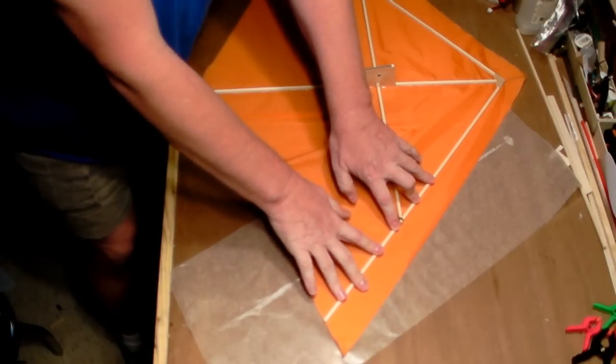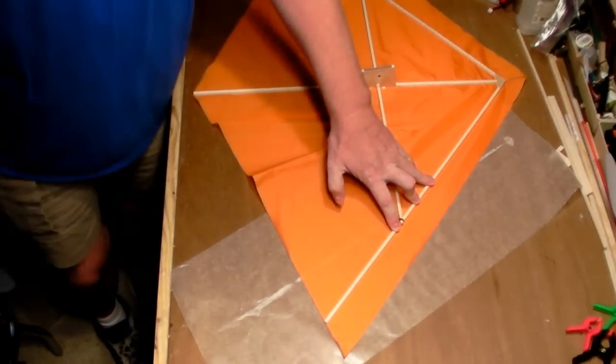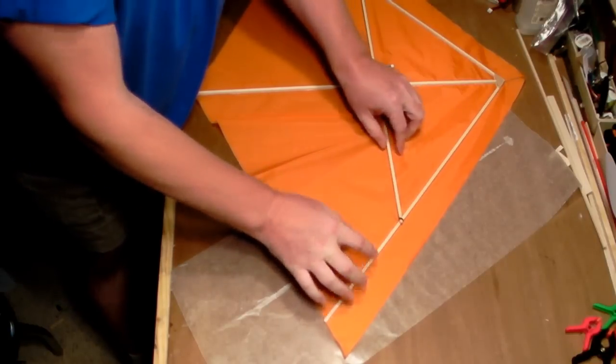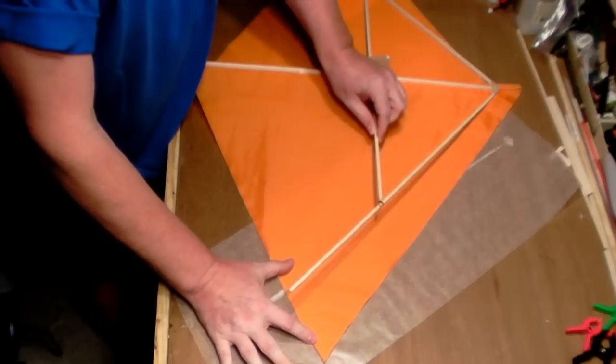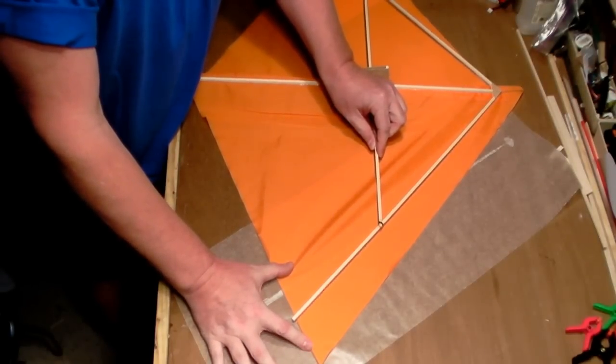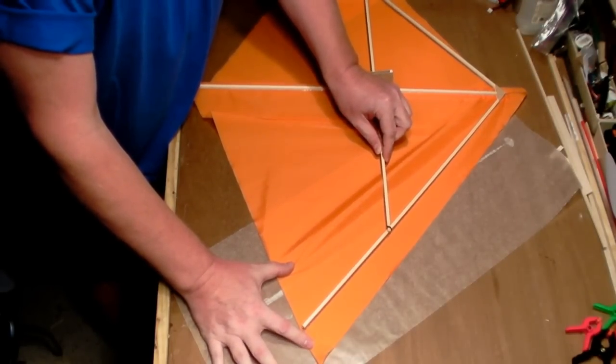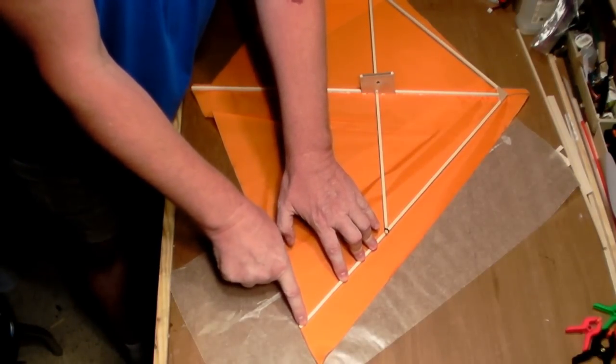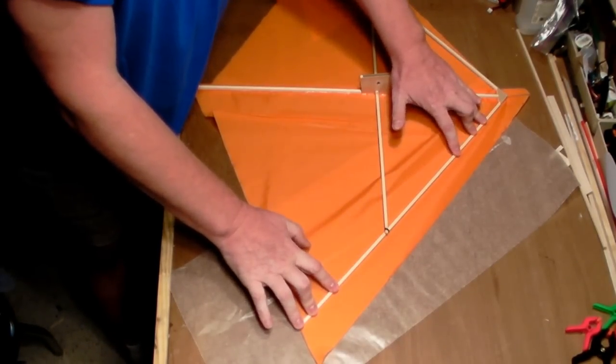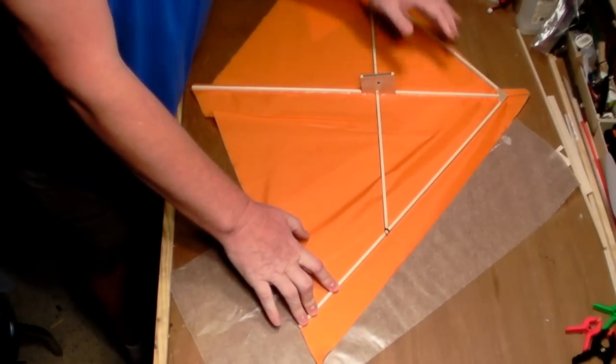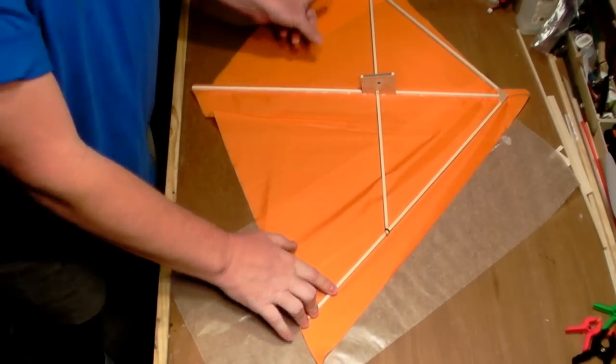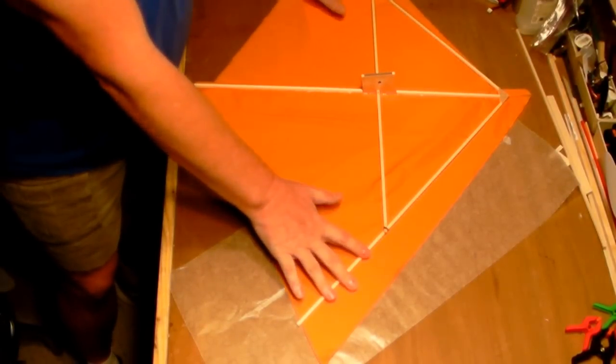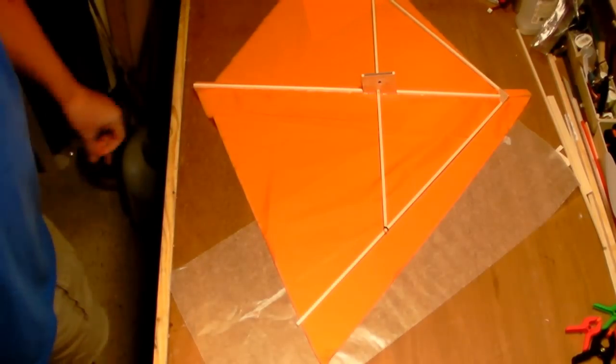I recommend you do one leading edge at a time. I have found with the goop, while it takes about 24 hours to set up, after about two hours you can work with it. Apply your glue and then lay everything nice and flat. Then slowly shift it over and try to set it down so that the sail comes up to the edge of our leading edge spar. Once you get that glued down into place, put some weight on it, let it set for a couple hours, and then you can come back and do the other side. I'm going to glue that all up off camera.